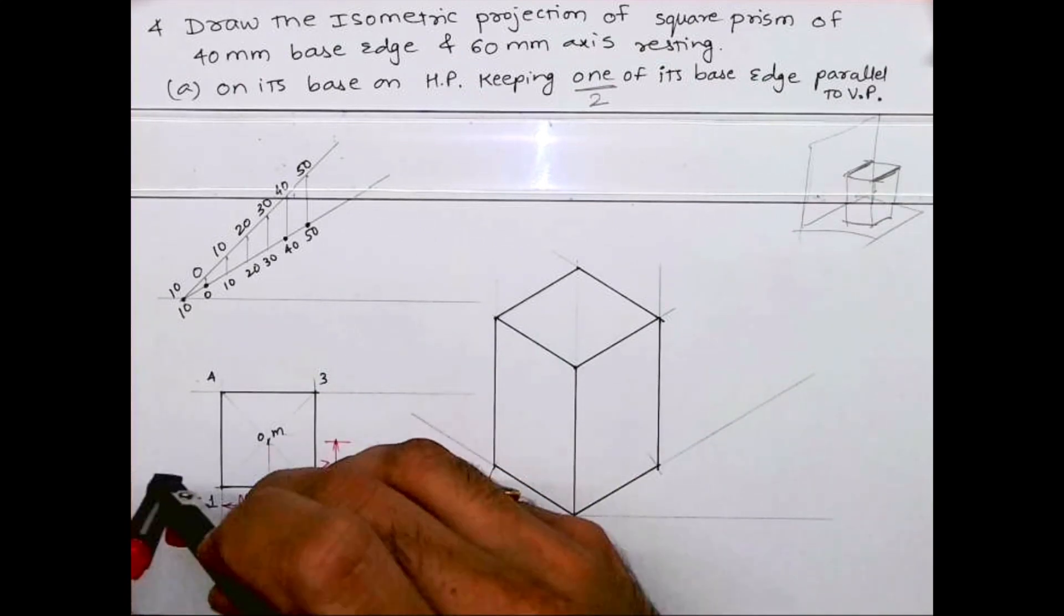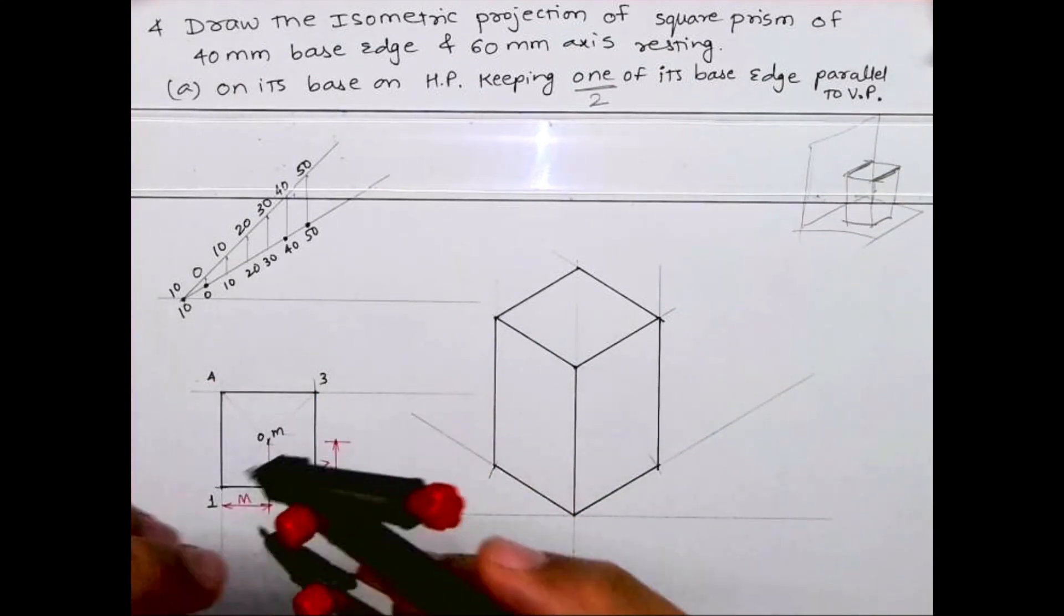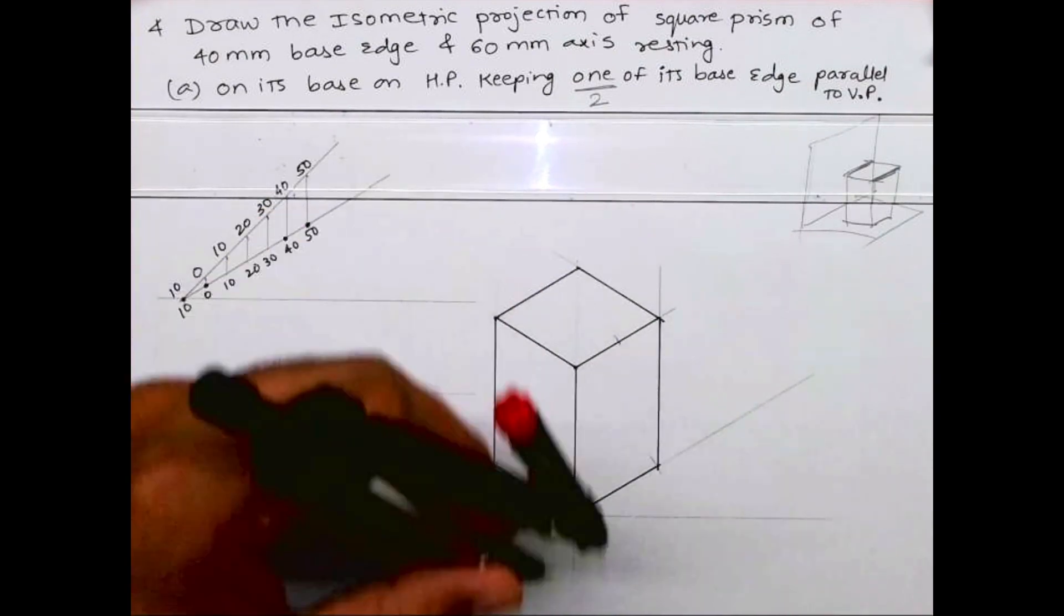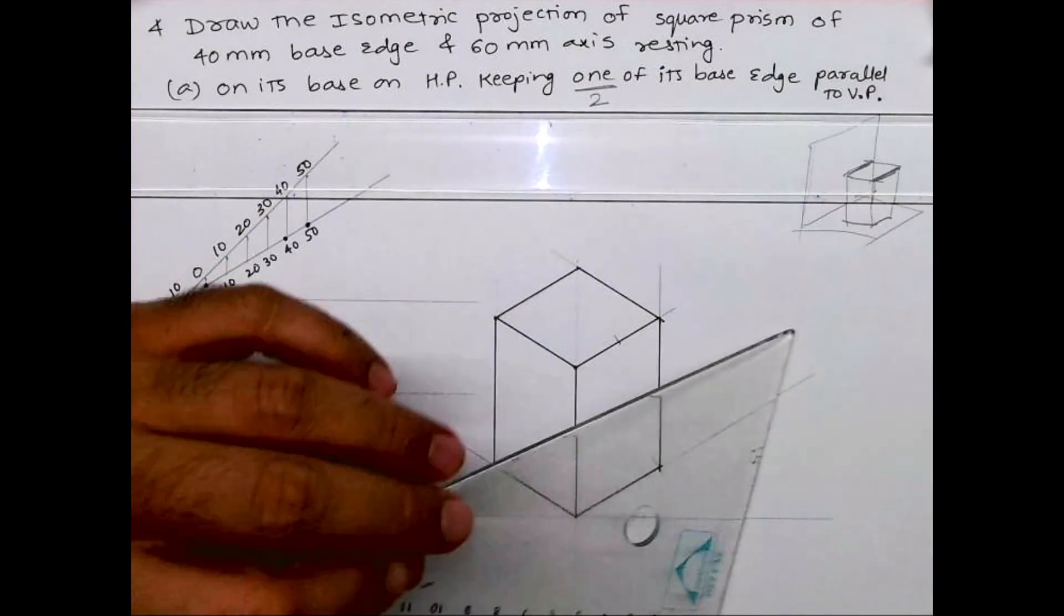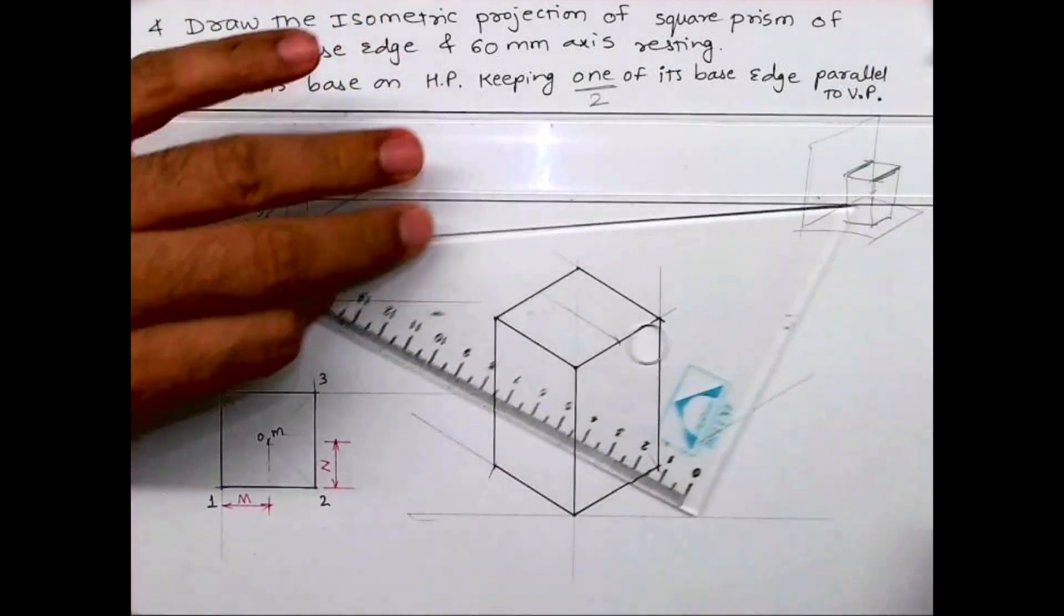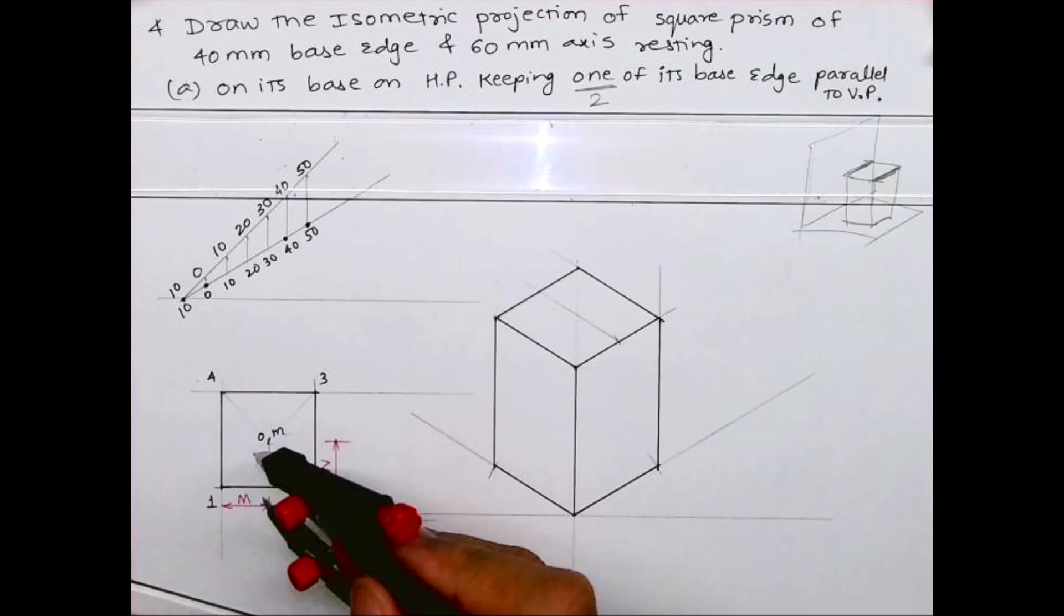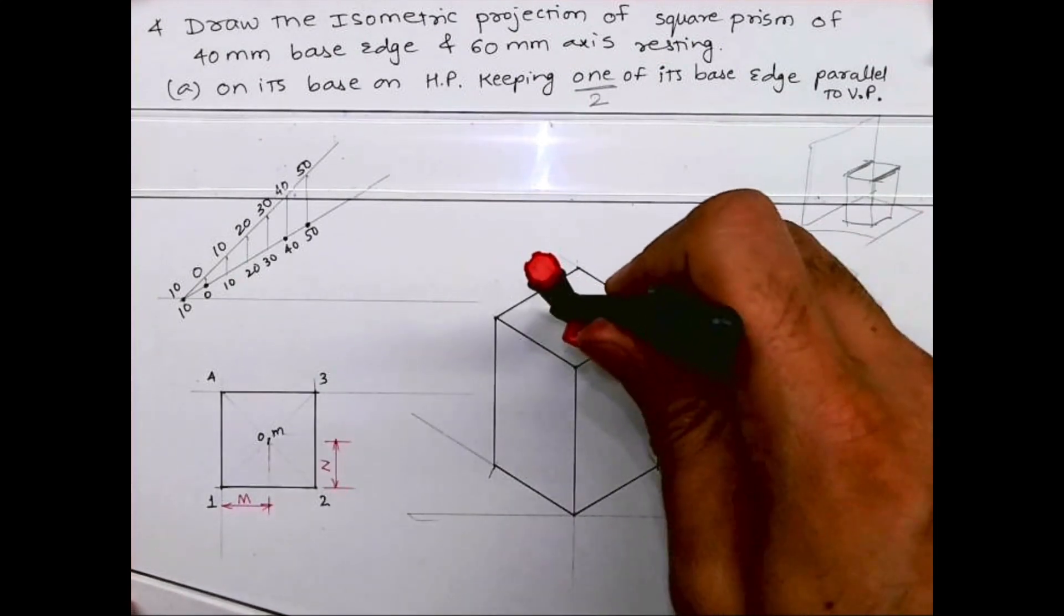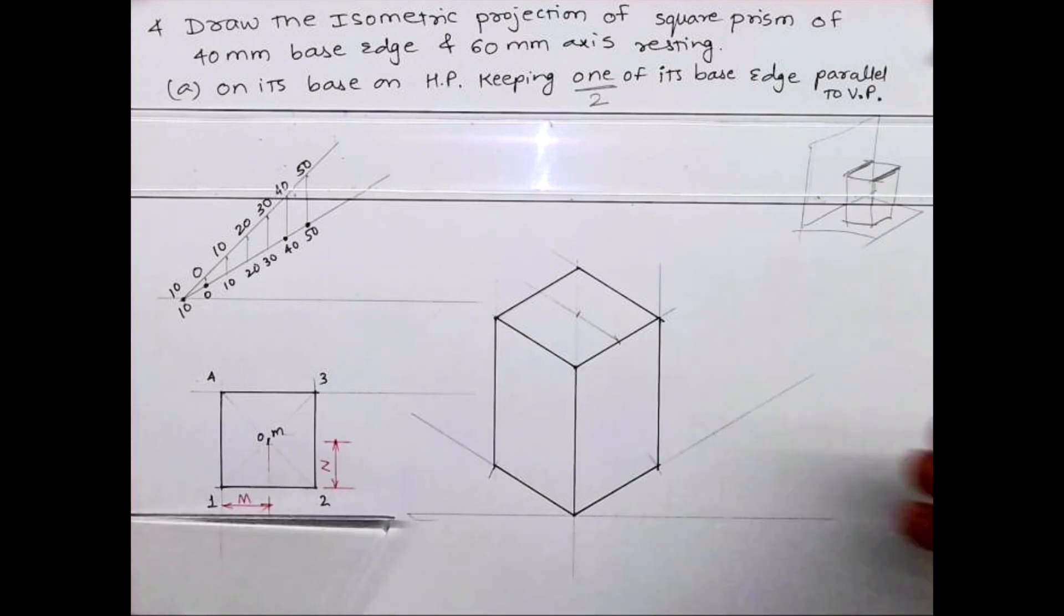Now we'll mark axis. We'll mark M, we'll cut it on this. And then I'll mark distance N, we'll cut from here. So we'll get the center point O.